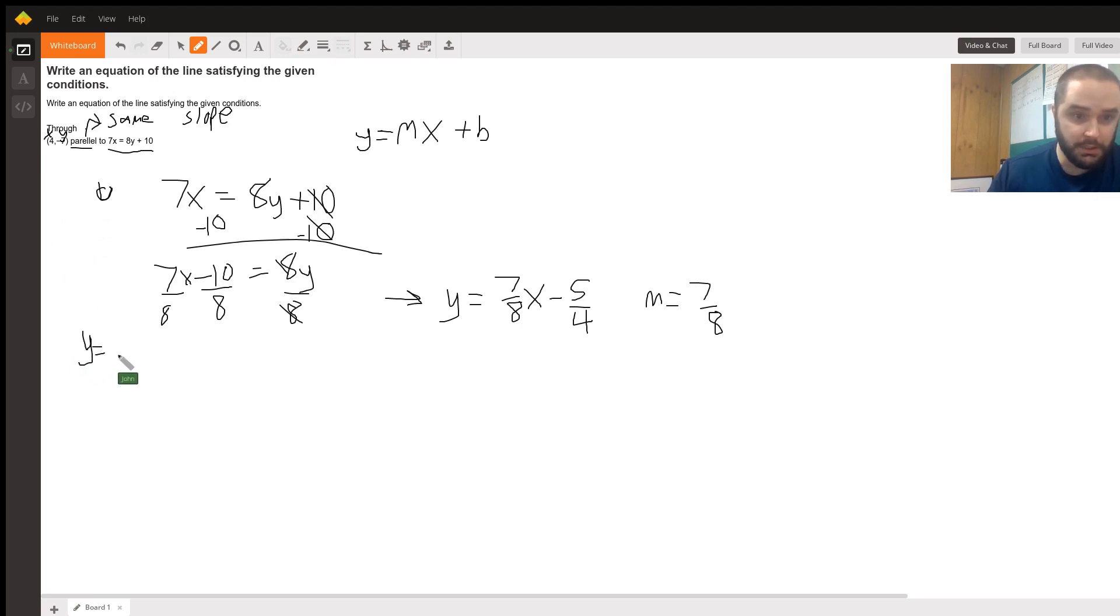So if we plug it into our point-slope formula, we plug in our... I don't know why I wrote 8. We're going to plug in our y, our m, and our x, and then we're going to solve for b. So our y number, instead of y, -7 equals our m which is 7/8.